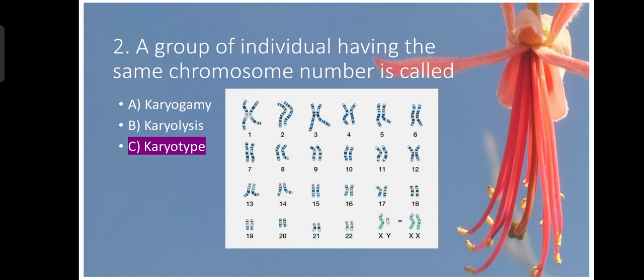Question number two. A group of individuals having the same chromosome number is known as karyotype. This question has uncertainty and the options are seems to be incorrect. So you people may also comment in for them.